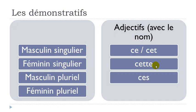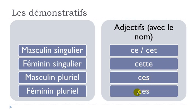The feminine form is 'cette'. It's quite interesting because the masculine form 'cet' and the feminine form 'cette' are written differently, but pronounced the same way. For the plural form, masculine plural is 'ces', and the feminine plural — good news — it's the same. So we have 'ce', 'cet', 'cette', and for the plural, only one form: 'ces'.